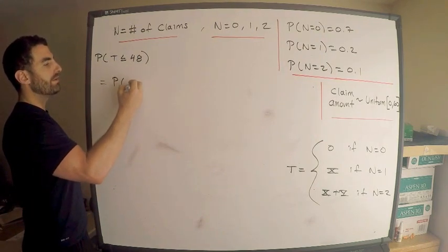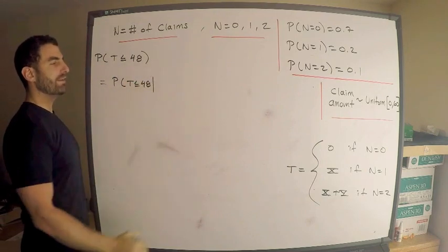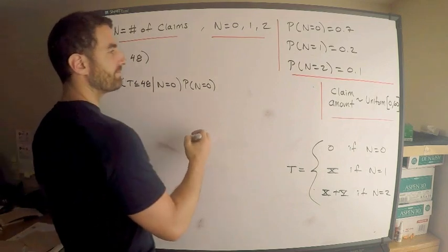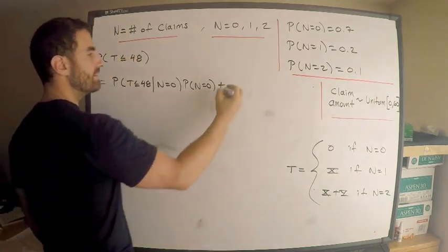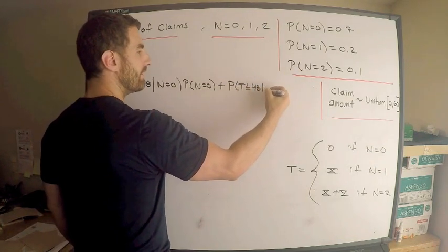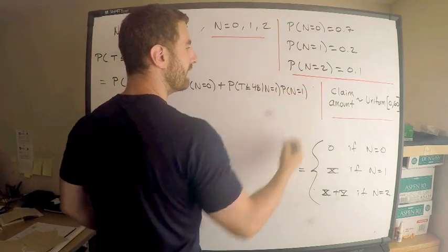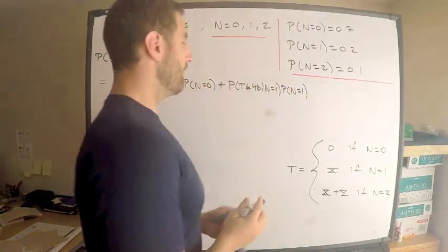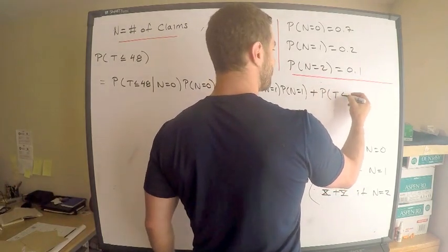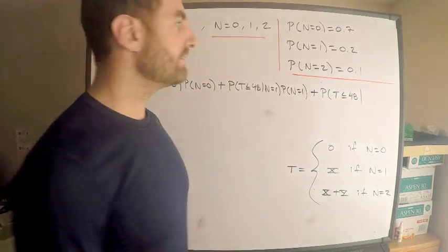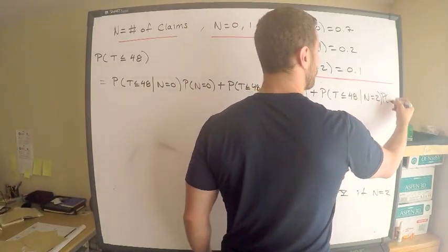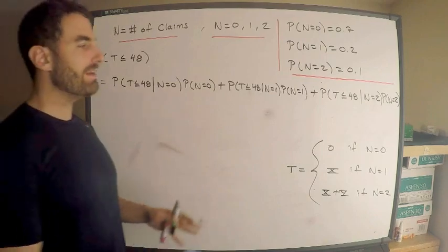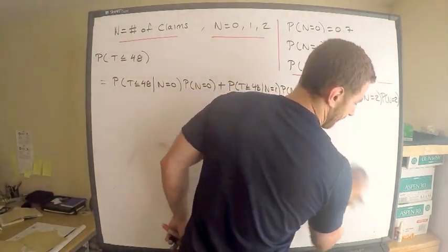So this is the probability T is less than or equal to 48 given N is zero times the probability N is zero plus, I want to fit it all in this line. This is probability T is less than or equal to 48 given N is one times the probability N is one plus probability T is less than or equal to 48 given N is two times the probability N is two. Barely squeeze it in there. Barely got it. Let's just write these things down. I'm going to need more room. So let's get rid of this. Get rid of this stuff right here. We can remember that much.